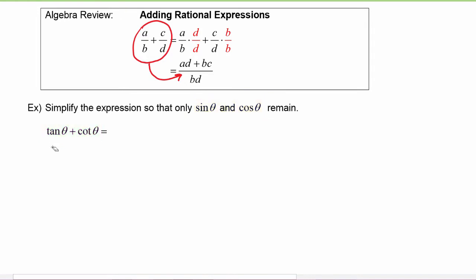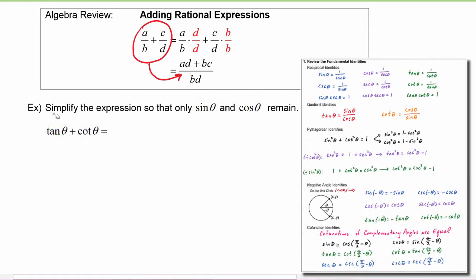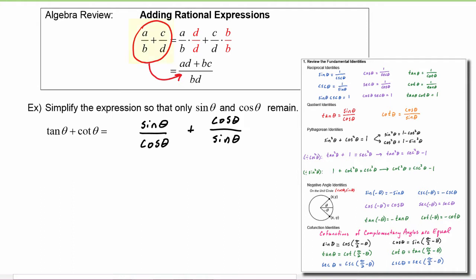We start out by substituting for each of these: tangent of theta becomes sine of theta divided by cosine theta, plus cotangent theta becomes cosine theta divided by sine theta. Now this is exactly the situation where we have two rational expressions whose denominators are different — here the denominator is cosine theta, and this denominator is sine theta.